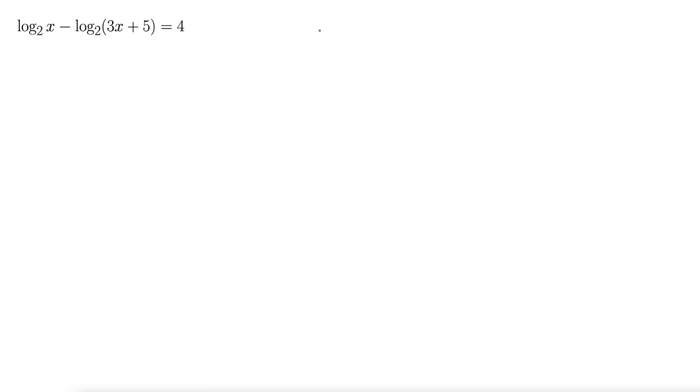So here I'm going to use this property: log base b of a minus log base b of c equals, combine them into a single log, and the minus outside becomes divide inside. Log base b of a over c, so I combine it into a single log.